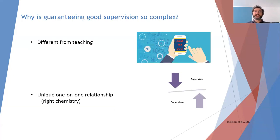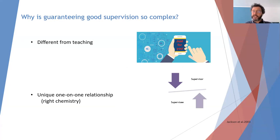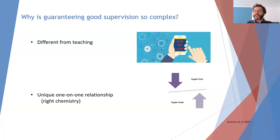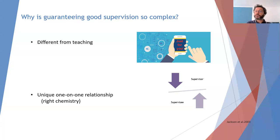Why is guaranteeing supervision so complex? Supervision is really different from teaching, where the professor can use a single approach for hundreds or thousands of students. Within supervision, there is a unique one-on-one relationship between the supervisor and supervisee. During my three or four years of PhD trajectory, I was speaking more with my supervisor than with my father. So this relationship is really, really important, and in order to work well, there should be a right chemistry between these two parties.